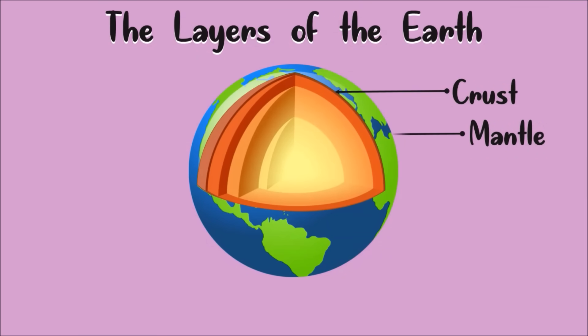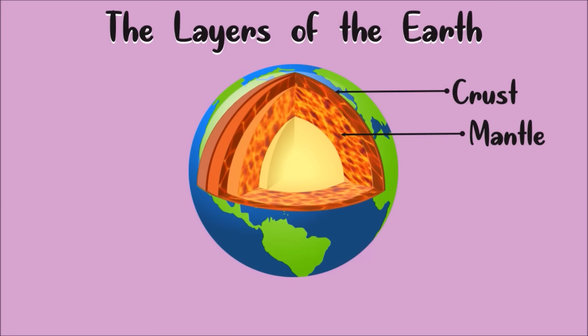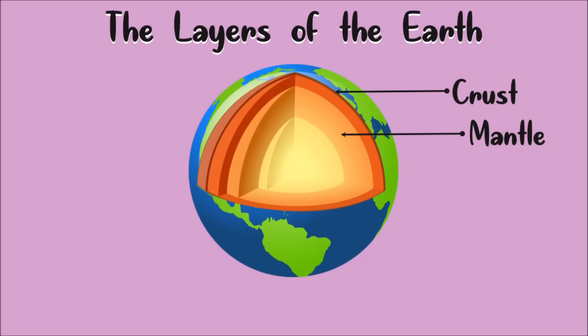The middle layer is called the mantle. The mantle is the widest layer of the Earth and it is mostly made up of magma. The mantle is divided into two: the one closer to the crust is called the upper mantle, and below the upper mantle is called the lower mantle.